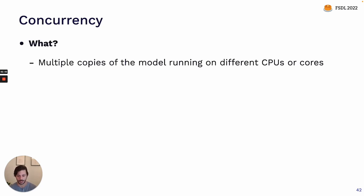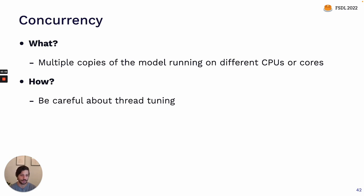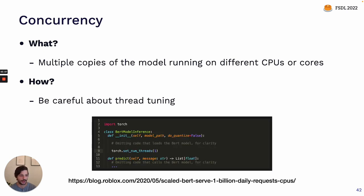In fact, it's possible to get very high throughput from CPU inference at relatively low cost using techniques like concurrency. Concurrency means on a single host machine, not just having a single copy of the model running, but having multiple copies running in parallel on different CPUs or CPU cores. The main technique to be careful about here is thread tuning — making sure that Torch knows which threads to use in order to run the model, otherwise different Torch models will compete for threads. There's a great blog post from Roblox about how they scaled BERT to serve a billion daily requests just using CPUs, finding it much easier and more cost effective than using GPUs.